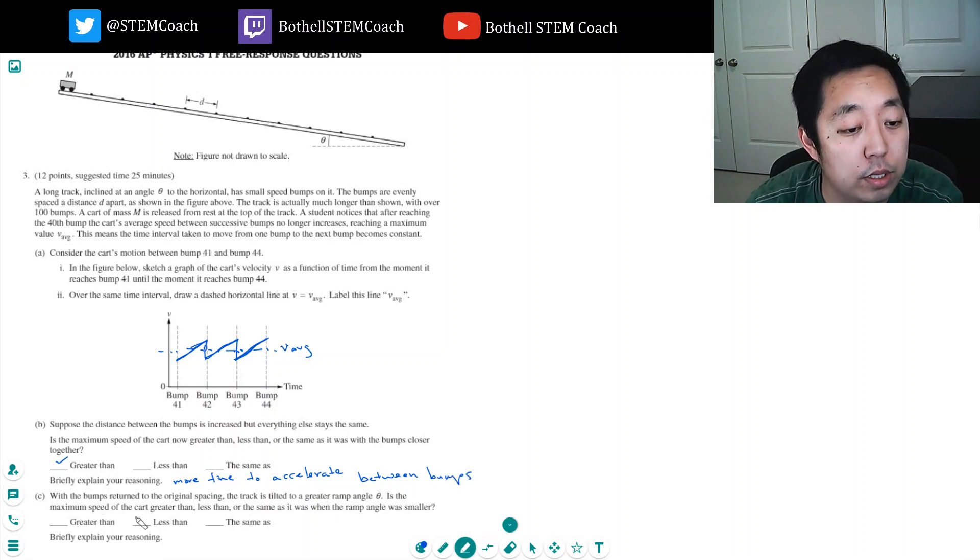When the bumps return to the original spacing, the track is tilted to a greater ramp angle theta. Is the maximum speed of the cart greater than, less than, or the same? Greater than, larger acceleration.